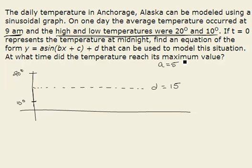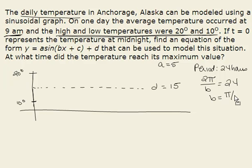We are now ready to find our period. We know that this is a daily temperature, therefore our period is 24 hours. To find b we know that our period of a sinusoidal graph is given by 2π over b. We need that to be 24. That tells us b is equal to π over 12.